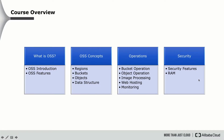Here is the course overview. We will introduce the following four parts. First is what is Object Storage Service — we will do an introduction about what is OSS, introduce the three types of storage, and compare traditional storage servers with OSS to figure out the advantages. We will also introduce the OSS features in this chapter.